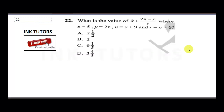The next question asks for the value of x plus 2n minus r over y, where x is 5, y is 2x, n is x plus 9, and r is n plus 6. We need to evaluate all the given statements.